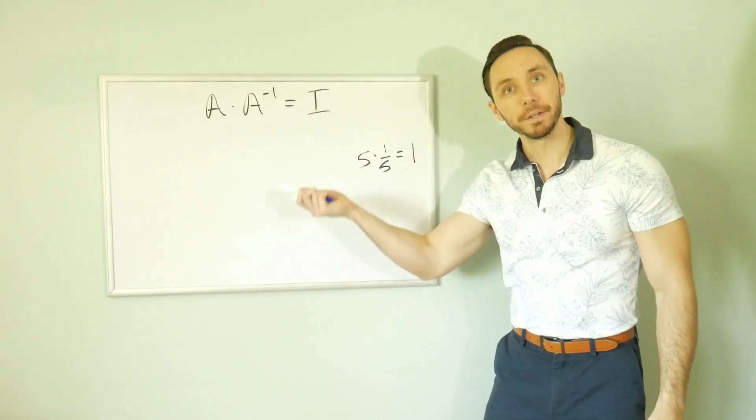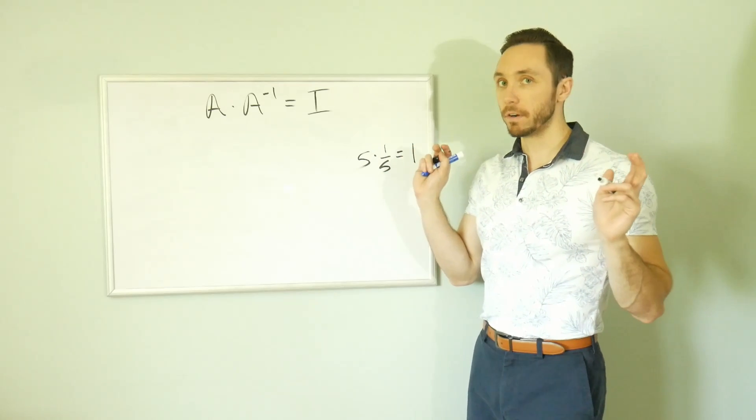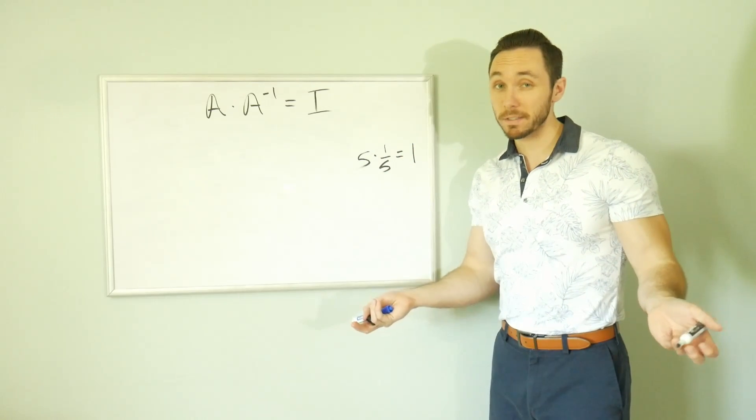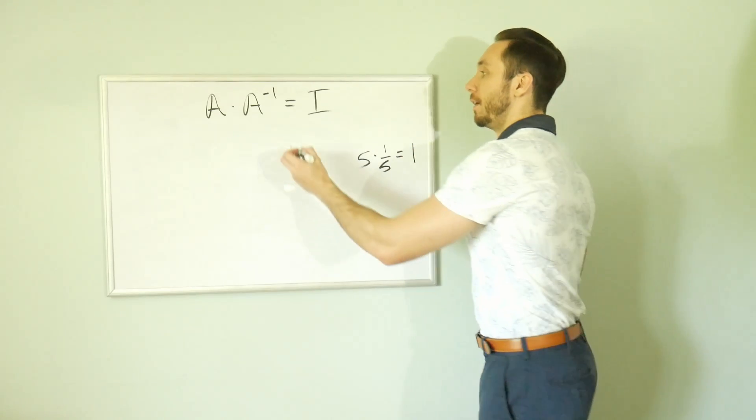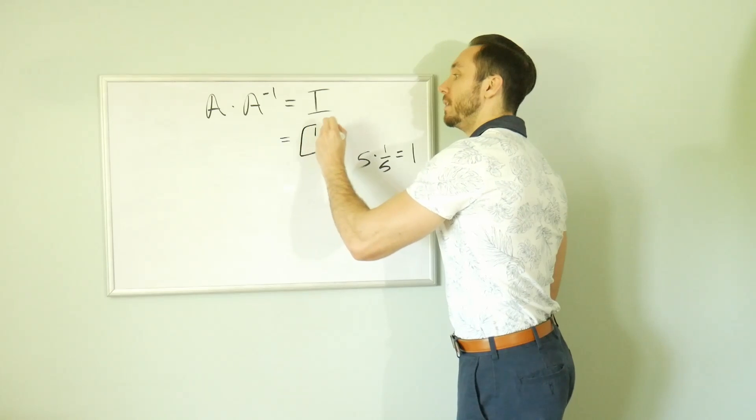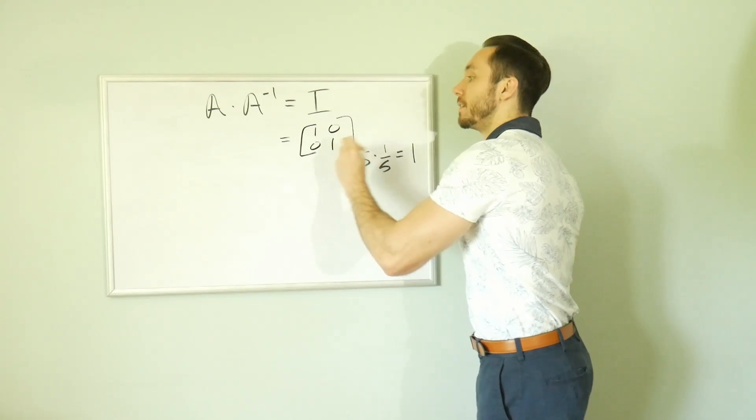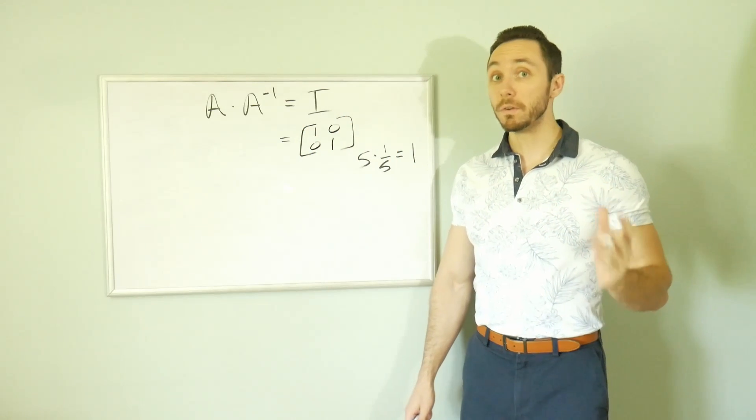That's the same idea, but with matrices. So what is the version of one in terms of a matrix and specifically a two by two? One is very specifically one, zero, zero, one. This is the identity matrix of a two by two.